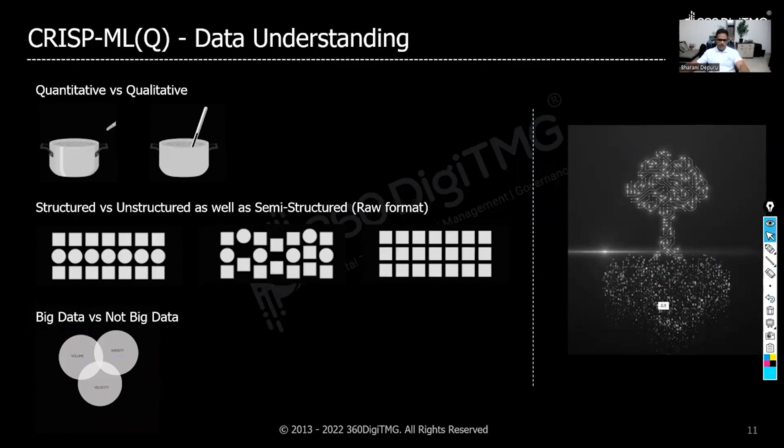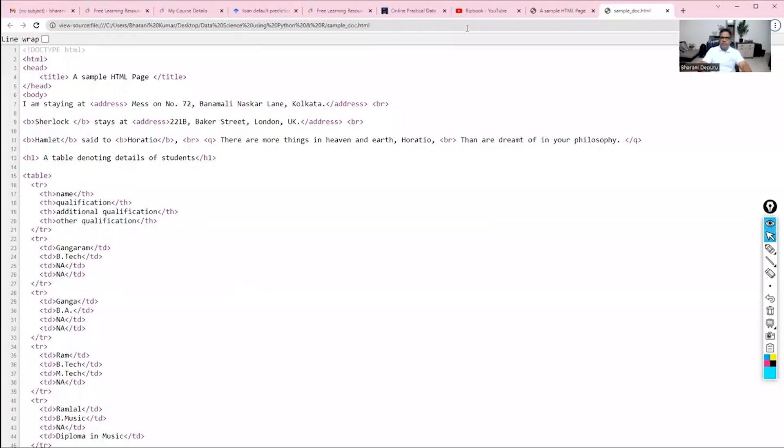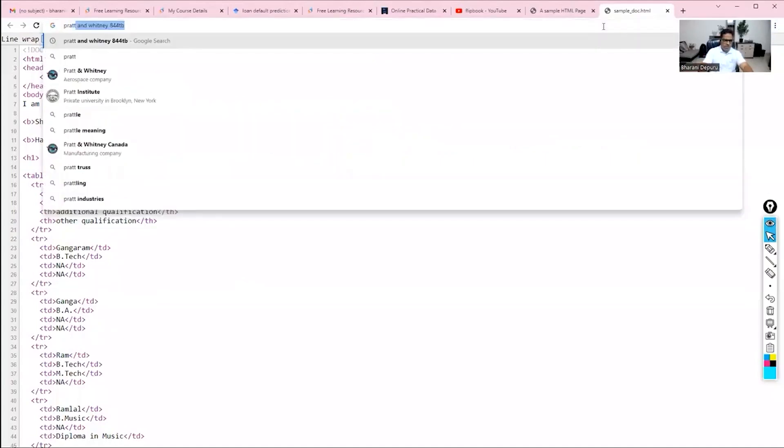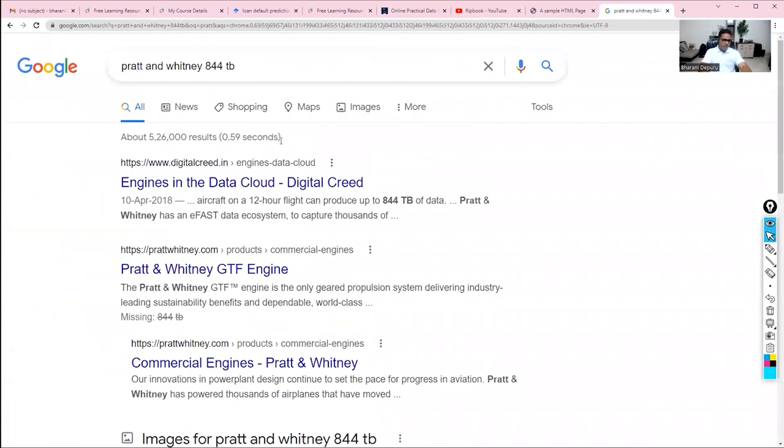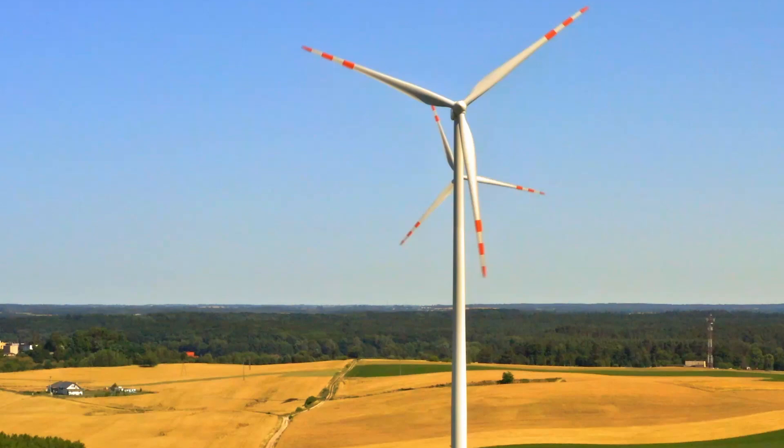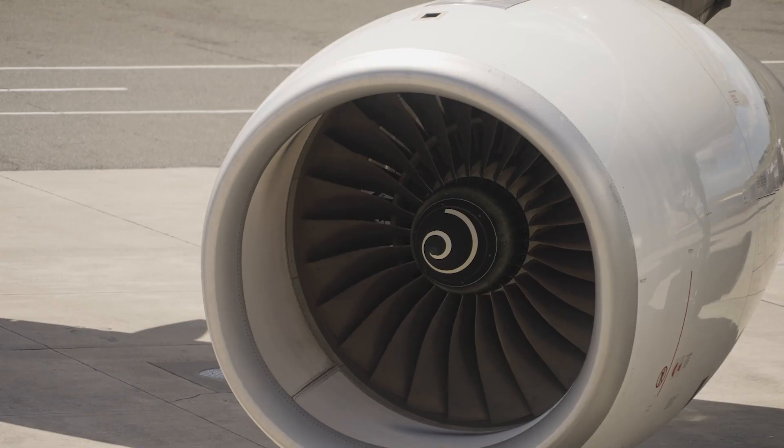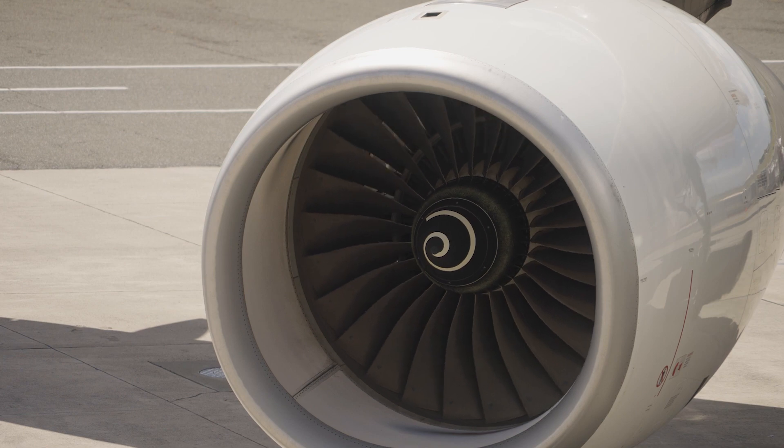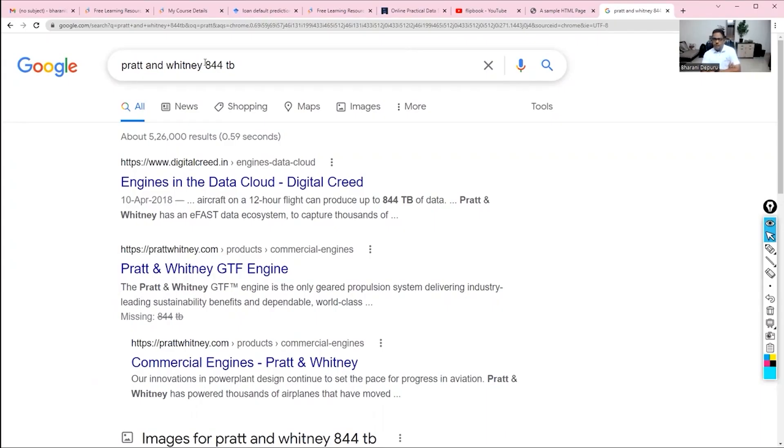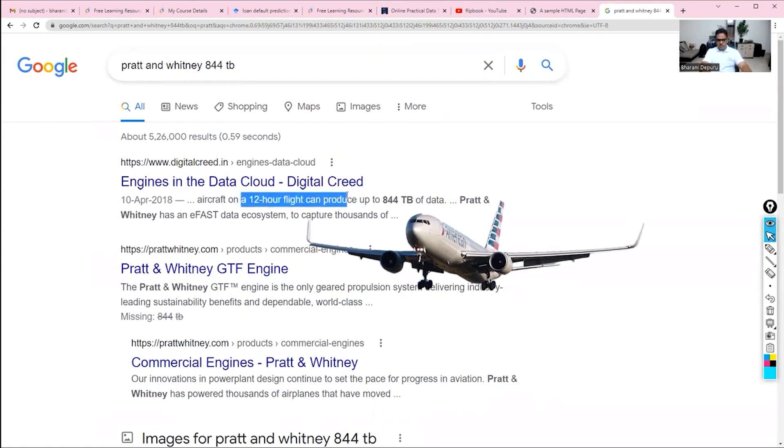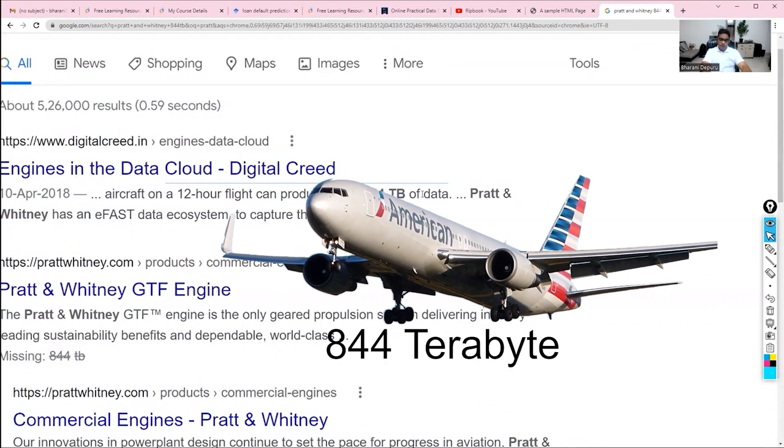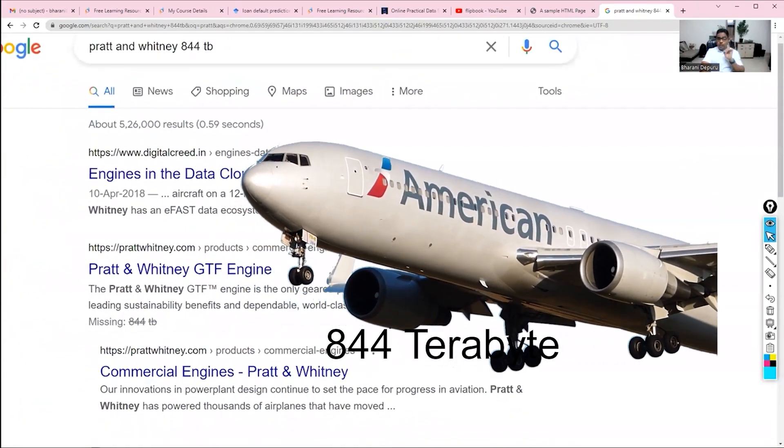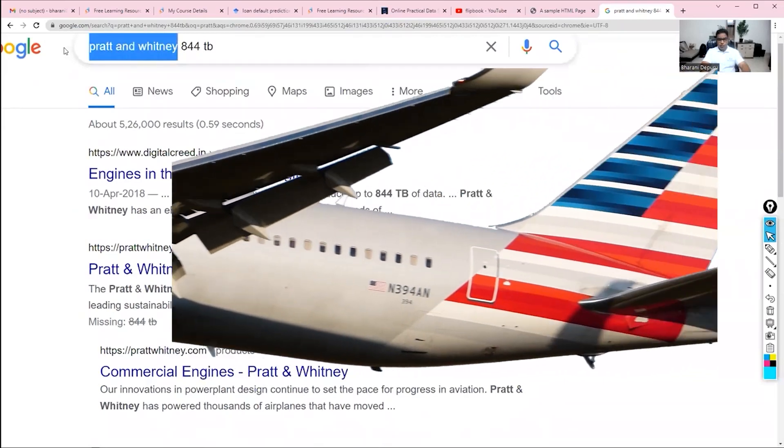For example, if I just go here and say that we have something called Pratt and Whitney - this is a company which produces wind turbines and engines which are fitted into the planes, airplanes, aircrafts. And supposedly a 12-hour flight journey can produce up to 844 terabytes of data from one engine of Pratt and Whitney.